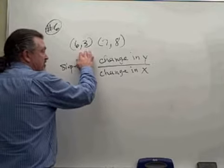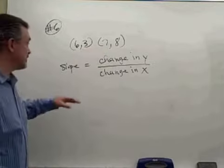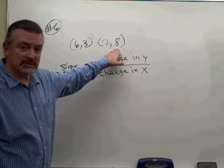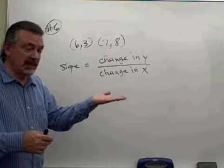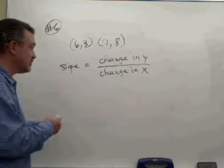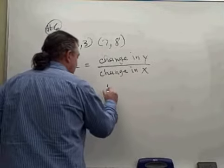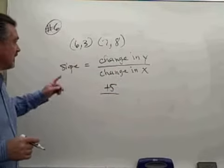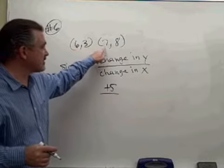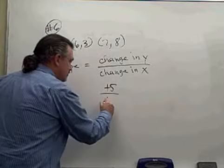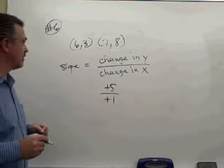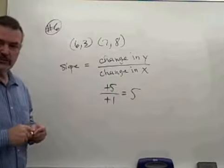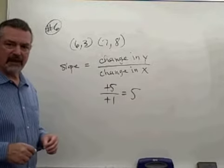Going from the point (6, 3) to the point (7, 8): the Y value here is 3, the Y value here is 8. So the Y went from 3 up to 8 — that's an increase of 5 for the change in Y. At the same time, the X went from 6 to 7, that's an increase of 1 for the X. So the slope of the line that would pass through those two points would be a slope of 5.